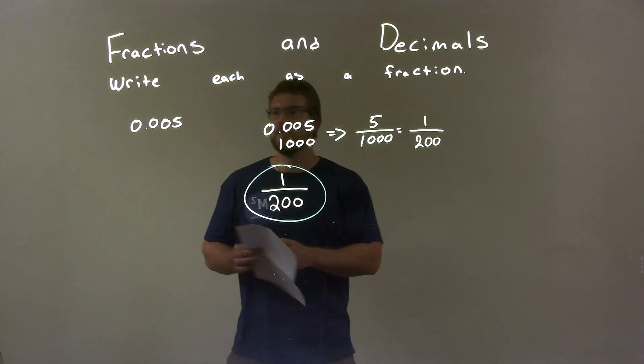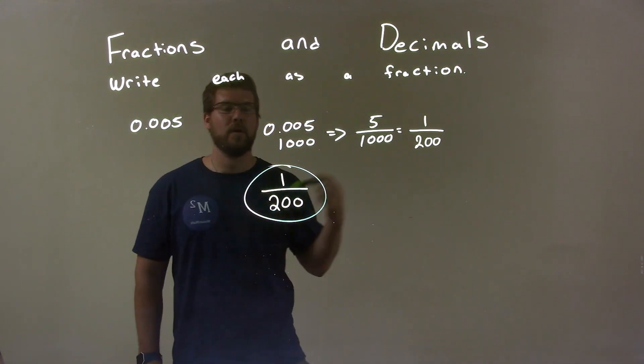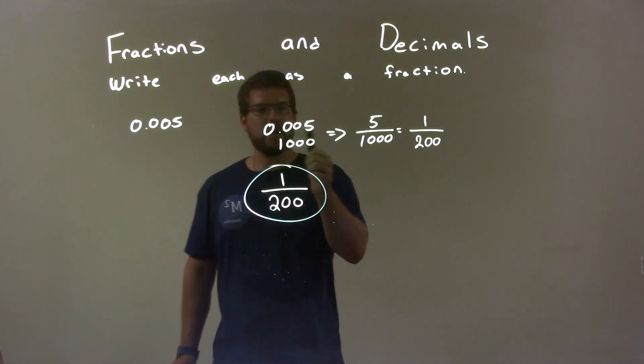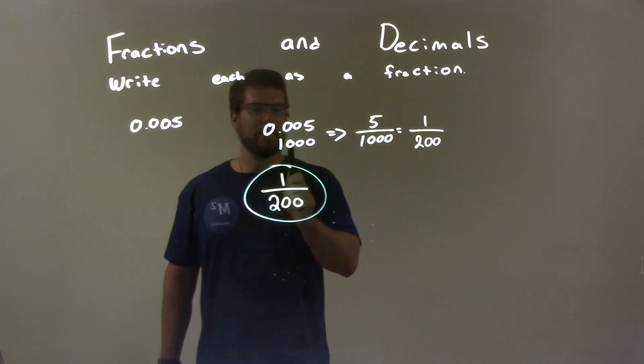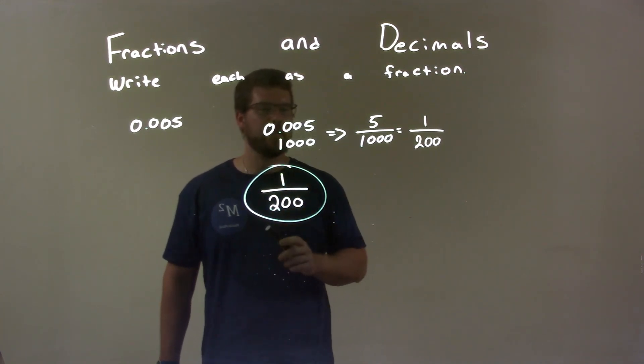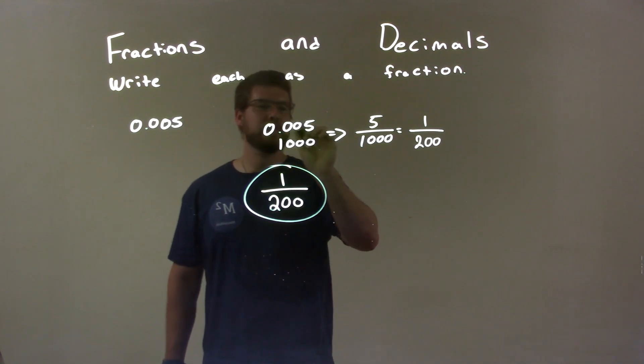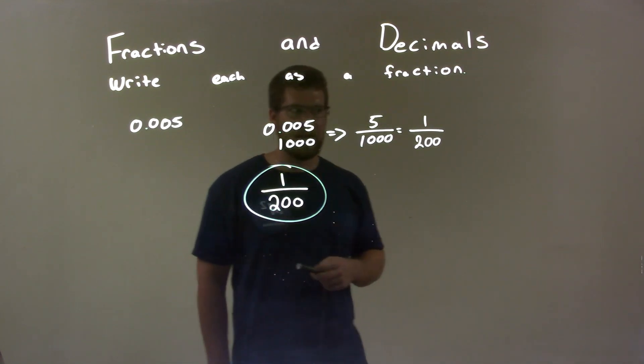Quick recap, we're given 0.005, and we'd write that as a fraction. I wrote it here, and I put a 1 where the decimal is, and 0's all the way till the end. That lets me know that I can write this 0.005 as 5 over 1,000.